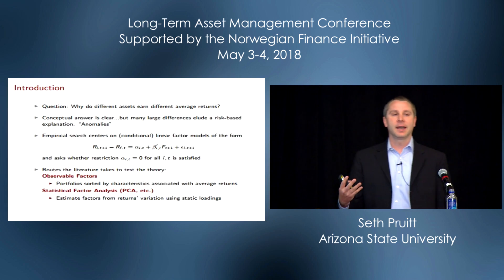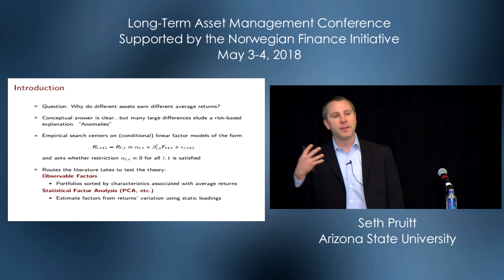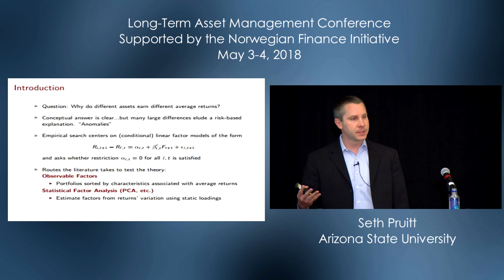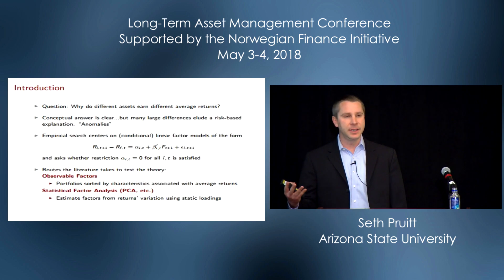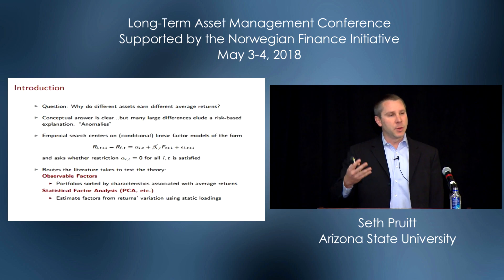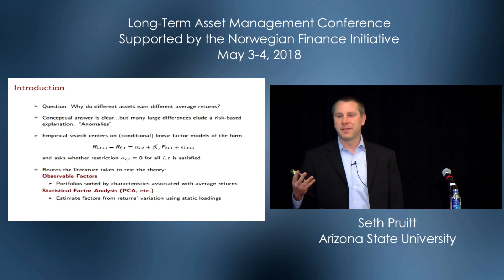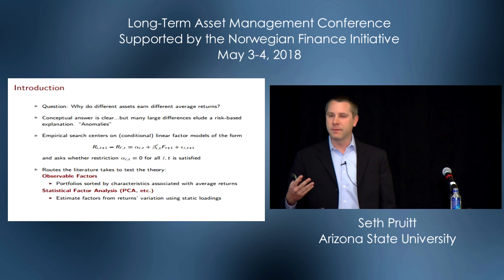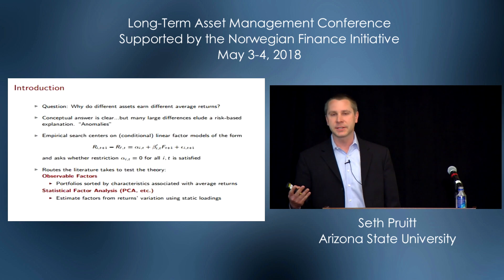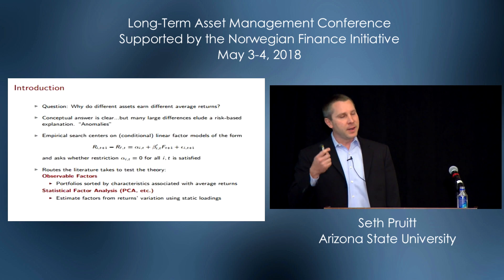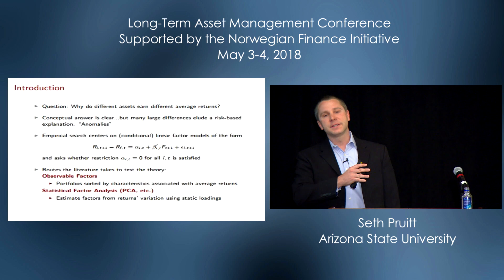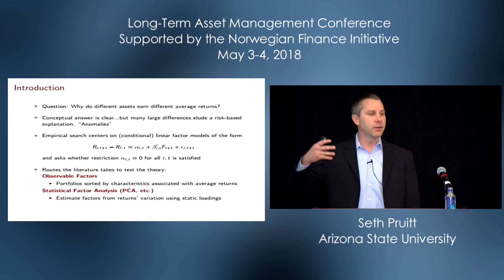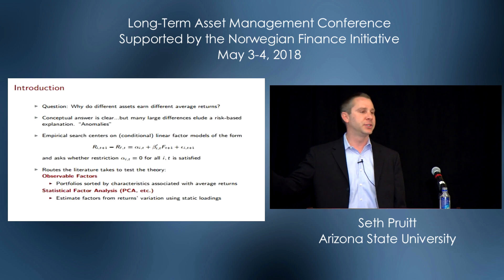The question we're tackling today is very familiar: why do different assets earn different average returns? Theoretically, the answer is clear — they should be exposed differentially to undiversifiable risks. But when we take our measures of those undiversifiable risks to the data, we find a lot of anomalies — ways to differentiate assets that lead to differences in average returns not associated with the risks we can measure.